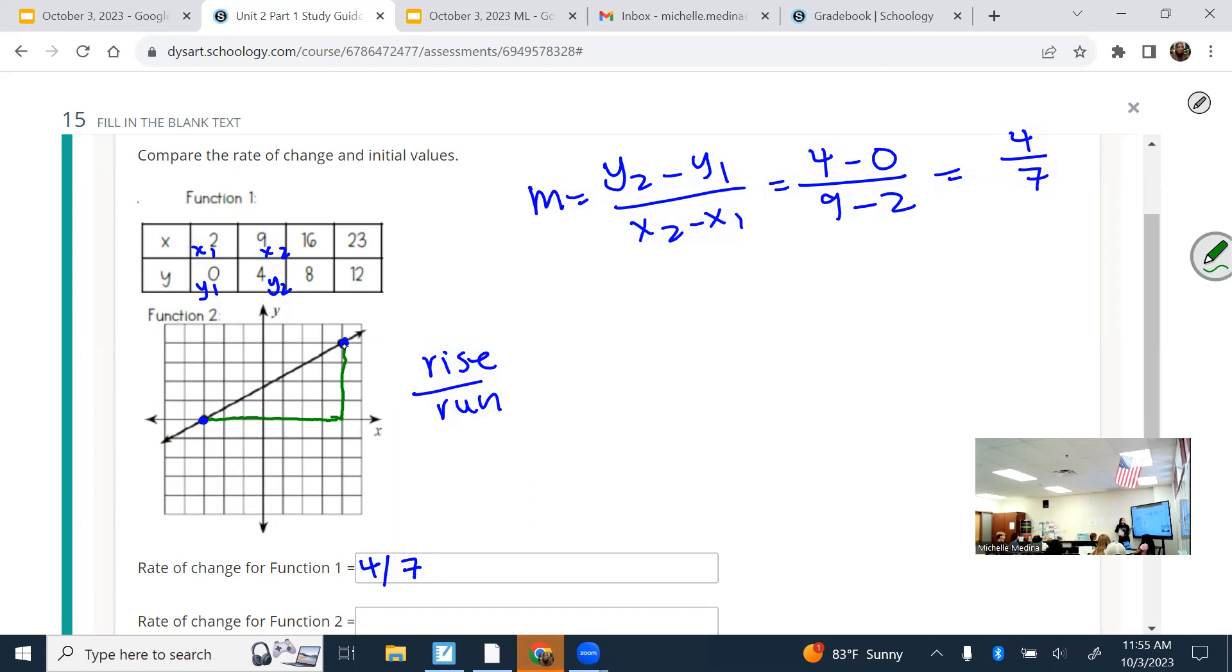So if I'm having to go up, that means my rise should be positive. And what is my rise for this? One, two, three, four. And then my run, it should always be positive. What is my run for this one? One, two, three, four, five, six, seven.